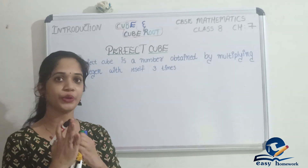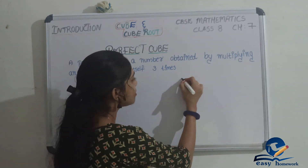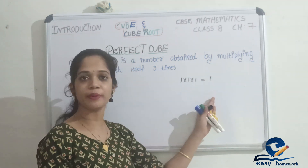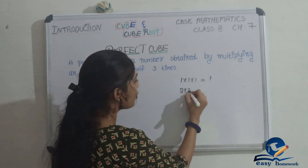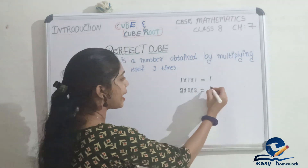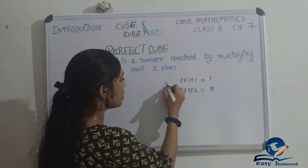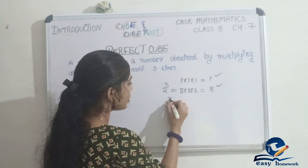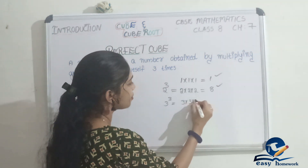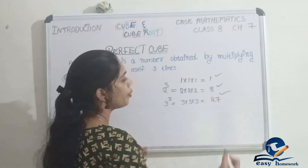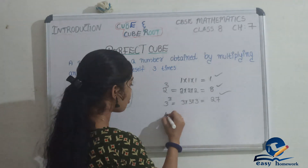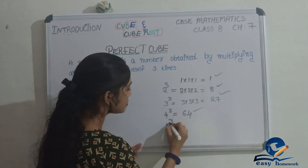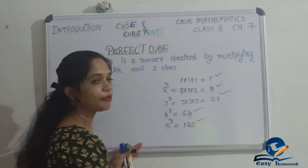Let's study perfect cubes from 1 to 10. 1 times 1 times 1 is 1 — that is a perfect cube. Next is 2: 2 times 2 times 2 is 8, so 8 is a perfect cube. Then 3 cubed is 27, which is a perfect cube. 4 cubed is 64. Then 5 cubed is 125, which is a perfect cube.